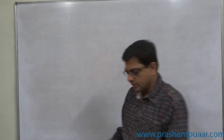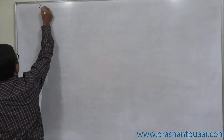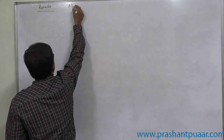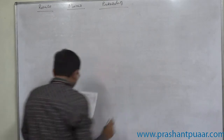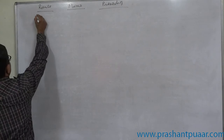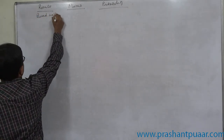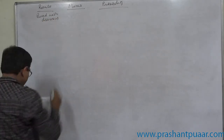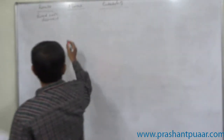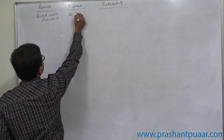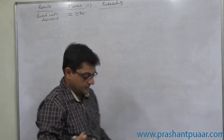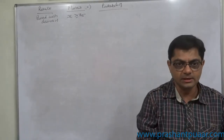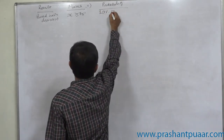Assuming the distribution to be normal, let us rewrite the problem. Result: description in marks and probability. Passed with distinction — it is given that a candidate must obtain at least 75 marks, so X is greater than or equal to 75. The percentage of students who passed with distinction is 10%, so the probability is 0.1.